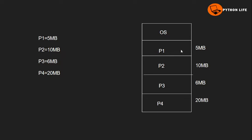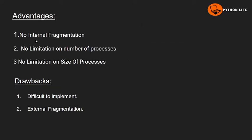In fixed size partition, if the process size is 5MB and the partition size is 8MB, the remaining 3MB is wasted — that is internal fragmentation. But here, in variable size partition, the partition size depends on the process request. We divide the partition based on the process size, so we don't have internal fragmentation.